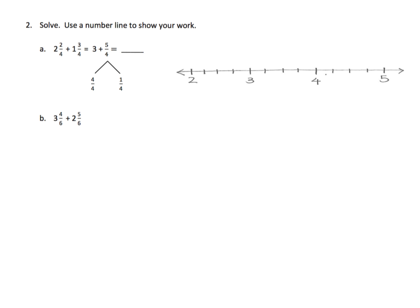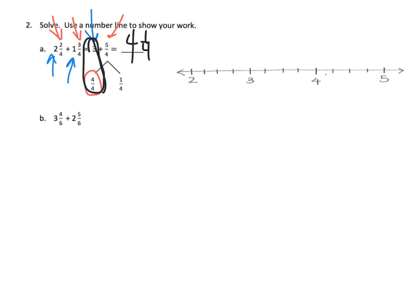Now we're adding a number line. You've got two and two fourths plus one and three fourths. We can start by adding the whole numbers — two plus one gives us three — and then we can add the fractions. Two fourths plus three fourths gives us five fourths, which is going to be decomposed. That five fourths can be decomposed to one whole plus one fourth, and so three wholes plus one whole gives us four, plus we have that extra quarter left over.